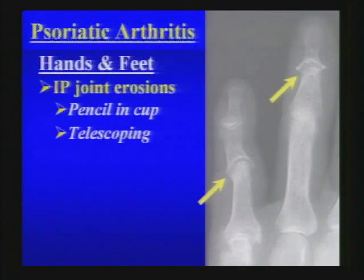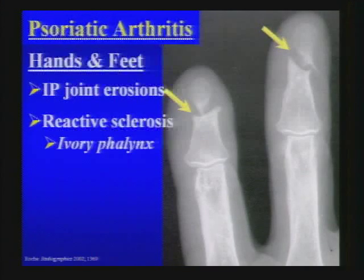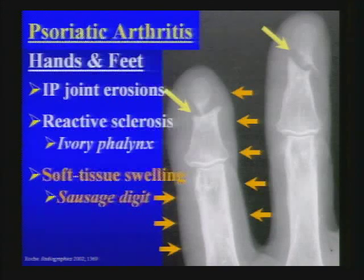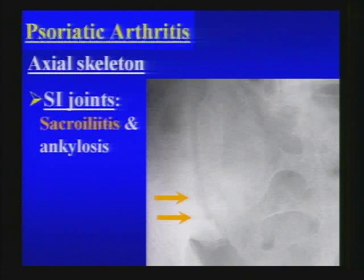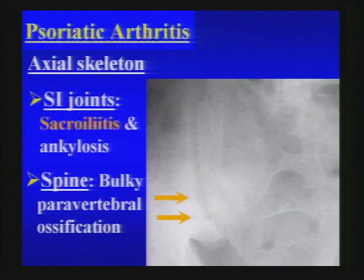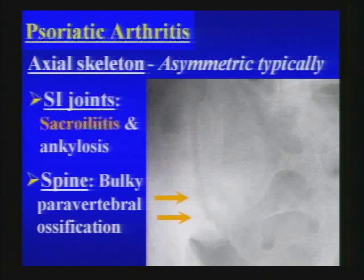Psoriatic arthritis affects the hands and feet commonly at the IP joints, causing characteristic deformities: the pencil-and-cup deformity and telescoping deformity. Reactive sclerosis — the ivory phalanx — may be seen. Diffuse soft tissue swelling of the involved digit, the sausage digit, is also characteristic. In the axial skeleton, the SI joints may be affected. In active sacroiliitis, we see erosion with marginal sclerosis, often asymmetrically involving the iliac side. In the spine, look for bulky paravertebral ossification, typically asymmetric side-to-side.